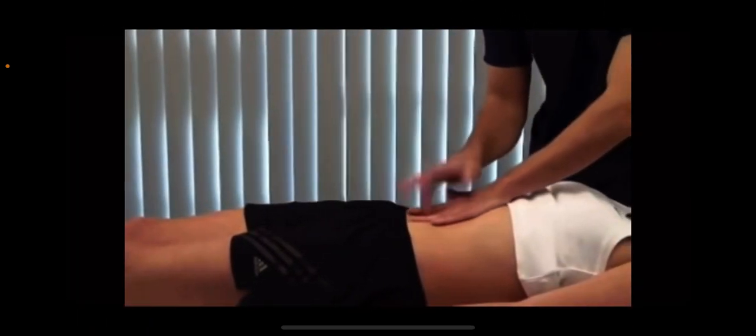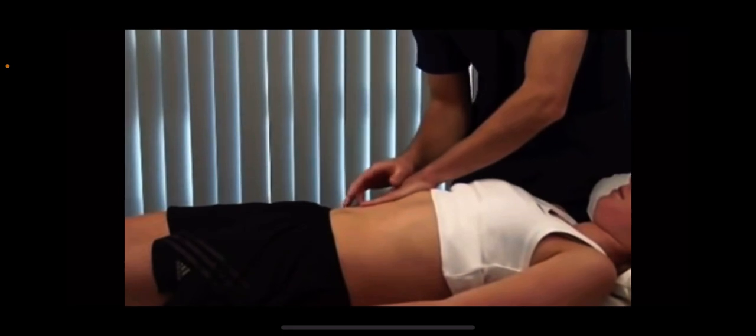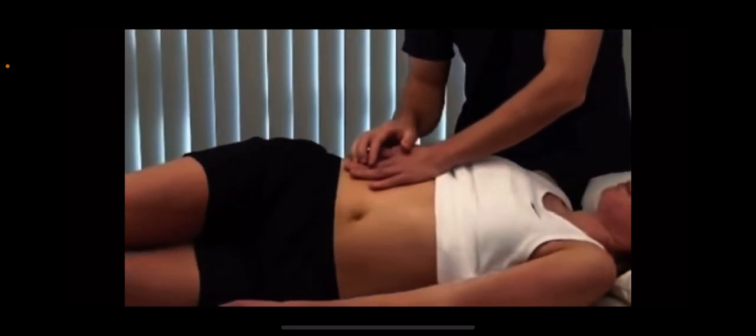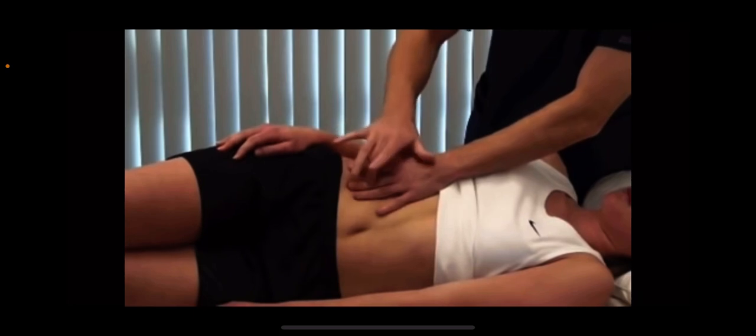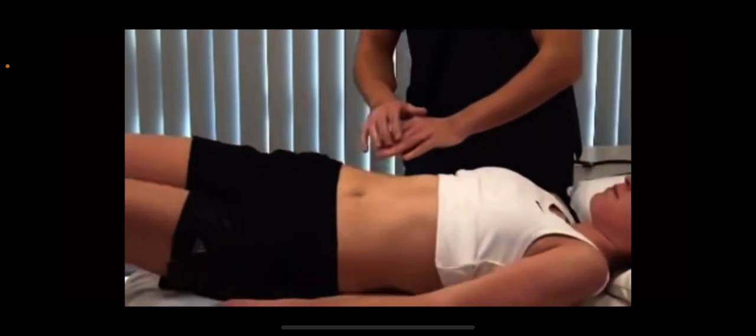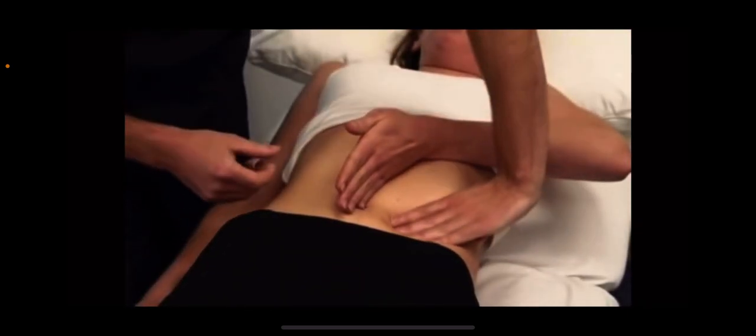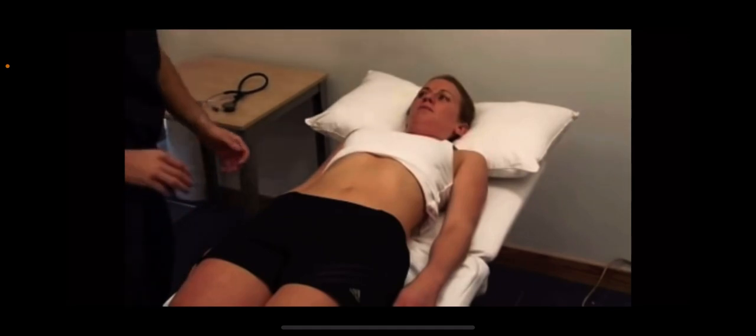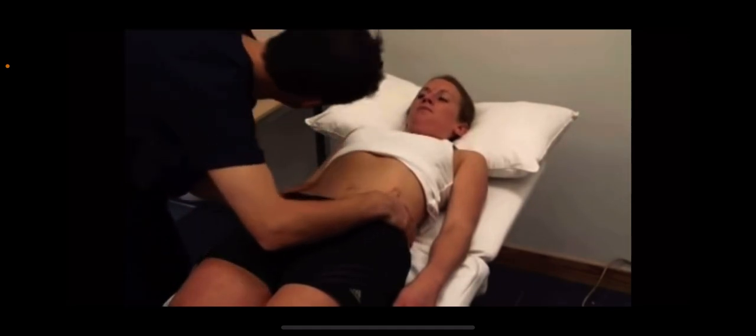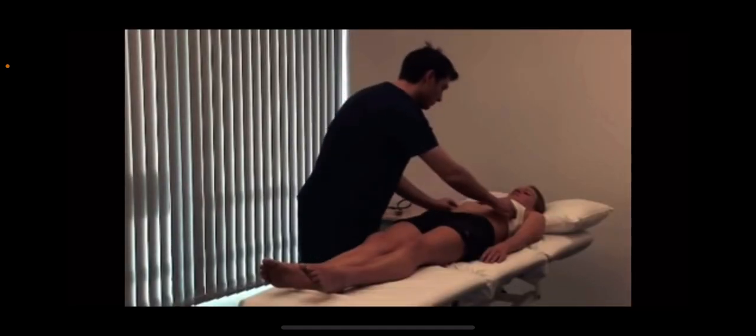Percuss for ascites by starting in the midline and working laterally toward the flanks. In the presence of ascites, there will be dullness laterally. Turn the patient and wait a few seconds. If the note changes from dull to resonant, this is shifting dullness and indicates ascites. Have the patient place their hand down the middle of their tummy. A transmitted fluid thrill is another way to demonstrate gross ascites. Here the patient's hand prevents transmission of the impulse through the skin. Warn the patient about testing for a succussion splash. An audible splash more than four hours after oral intake indicates delayed gastric emptying due either to gastric outlet obstruction or gastroparesis.